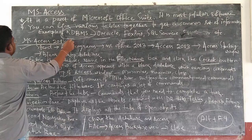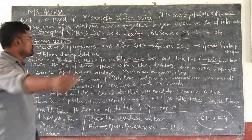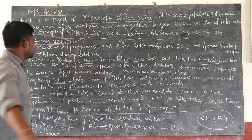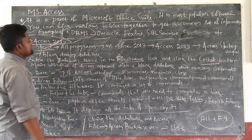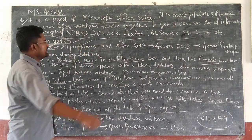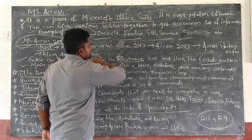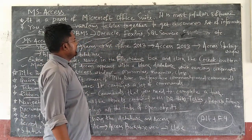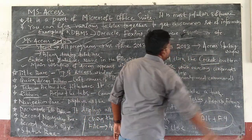In this book we have MS Access 2013. To open MS Access 2013, click on the Start button, then click on All Programs. You will see MS Office 2013. Click on MS Office 2013, then click on Access 2013.